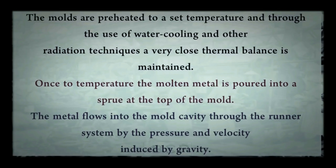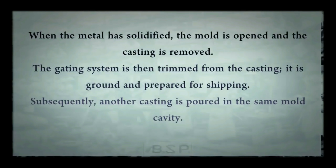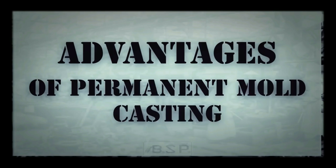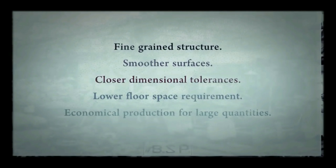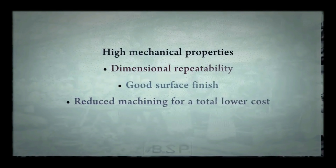The metal flows into the mold cavity through the runner system by the pressure and velocity induced by gravity. When the metal has solidified, the mold is opened and the casting is removed. The advantages of permanent mold casting are: fine grain structure, smoother surfaces, closer dimensional tolerances, lower floor space requirement, economical production for large quantities, high mechanical properties, good surface finish, and reduced machining for a total lower cost.